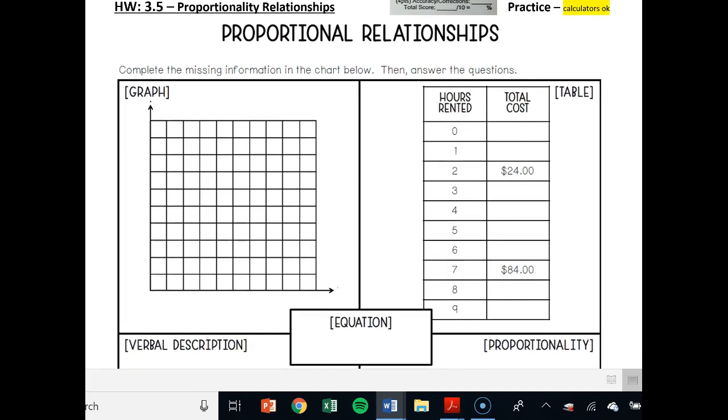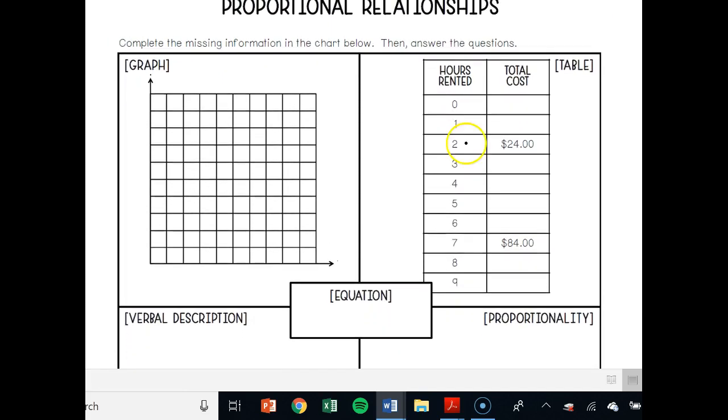This is complete the missing information in the chart below. First, if we've got 24 over 2, it's going to be very helpful to fill out this chart first in order to get the graph. Let's go ahead and find our constant of proportionality.